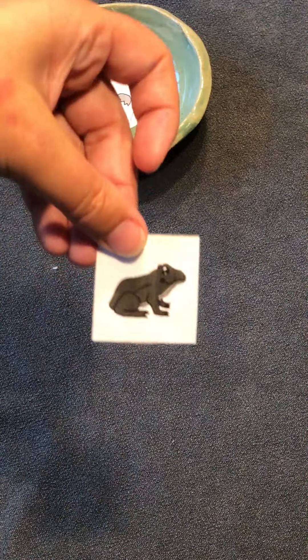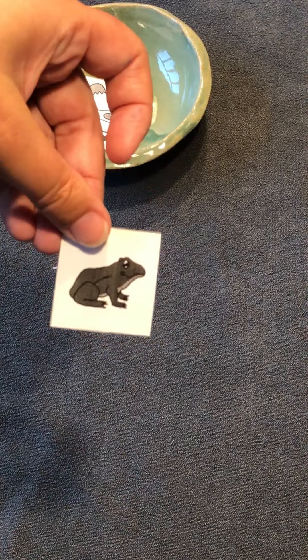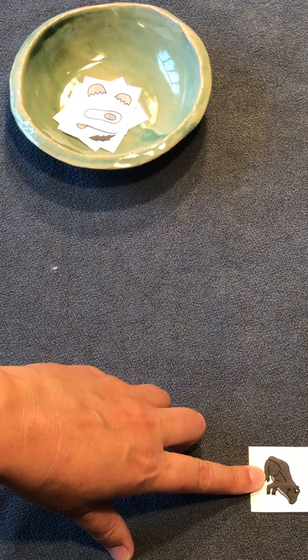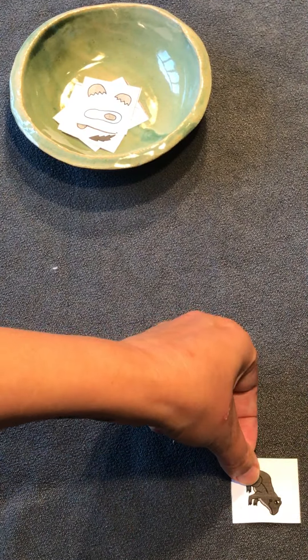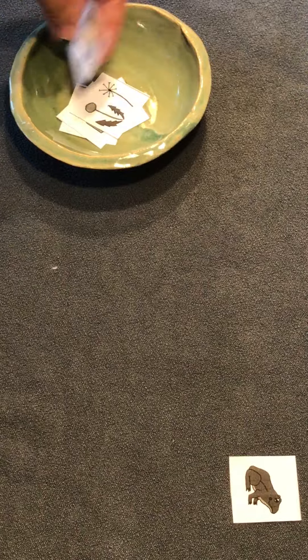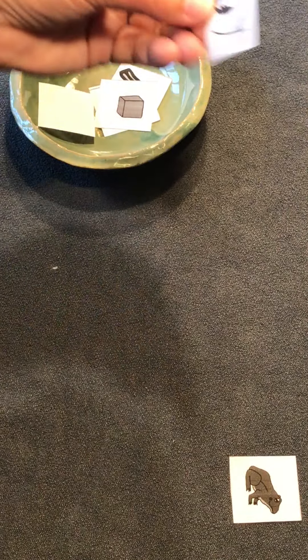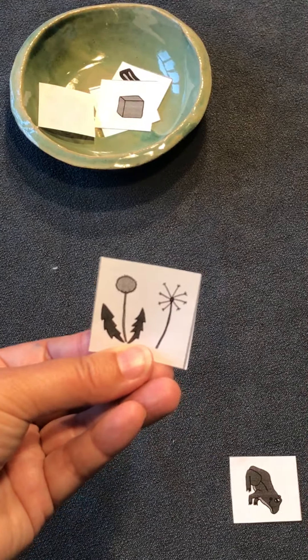So we have here a frog, and that's what I would say to my students. I would say we have a frog, or this is a frog. This is a dandelion.